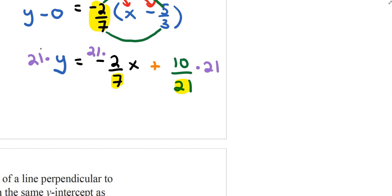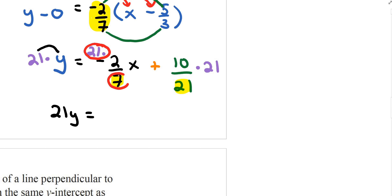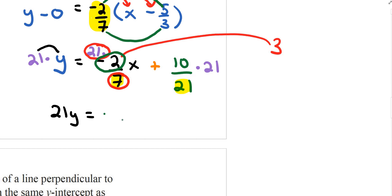21 times y gives 21y. For the x term: 21 divided by 7 is 3, and 3 times negative 2 is negative 6, giving negative 6x. The 21s on the constant term cancel, leaving positive 10.